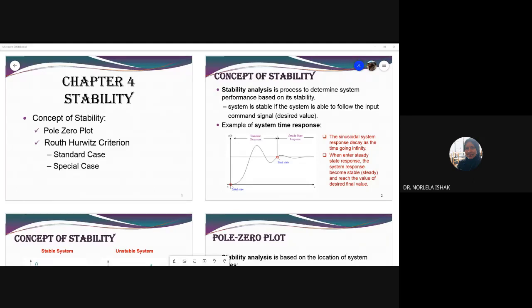First, you have to analyze the transient parameters for first order and second order. From the second order, we can divide into four or five types of behavior — we can categorize second order into a few types depending on the location of poles and damping ratio. After that, we evaluate error from the unity feedback system, and what's the relationship of error to the system type and to the input.